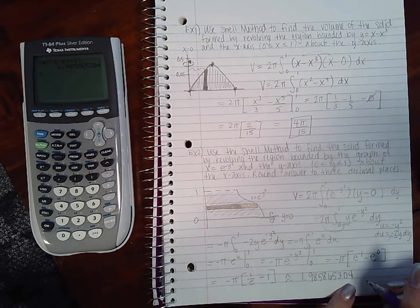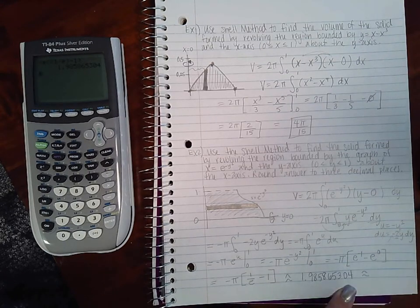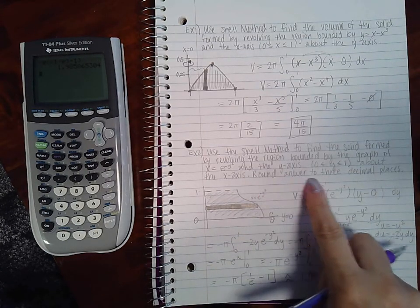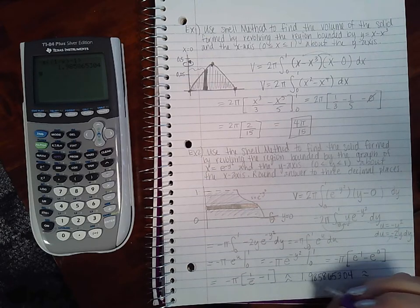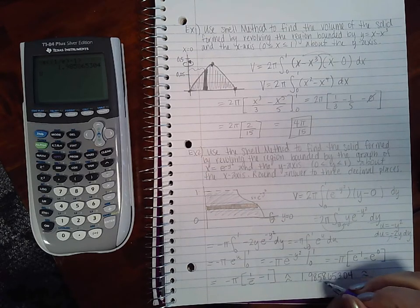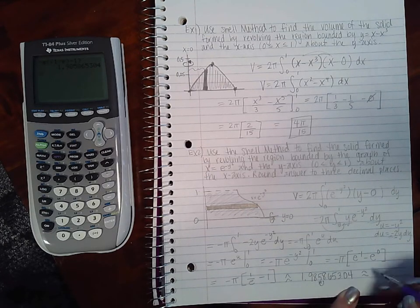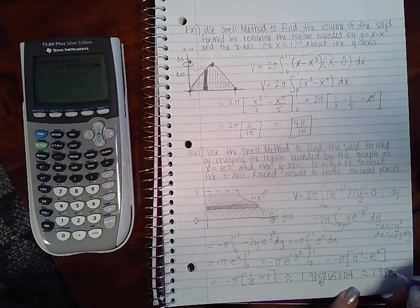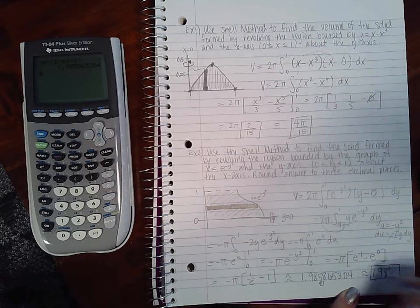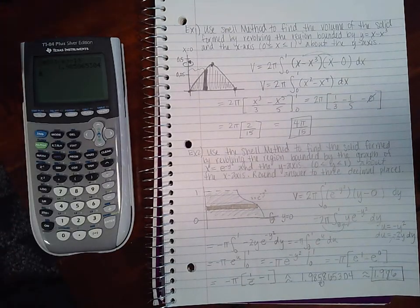And I get it's approximately 1.985865304. That's still rounding, but I need to round it to put it in my computer. It says round your answer to three decimal places. To three, that eight is going to make it go up, so it's going to be 1.986 that you type inside of WebAssign.